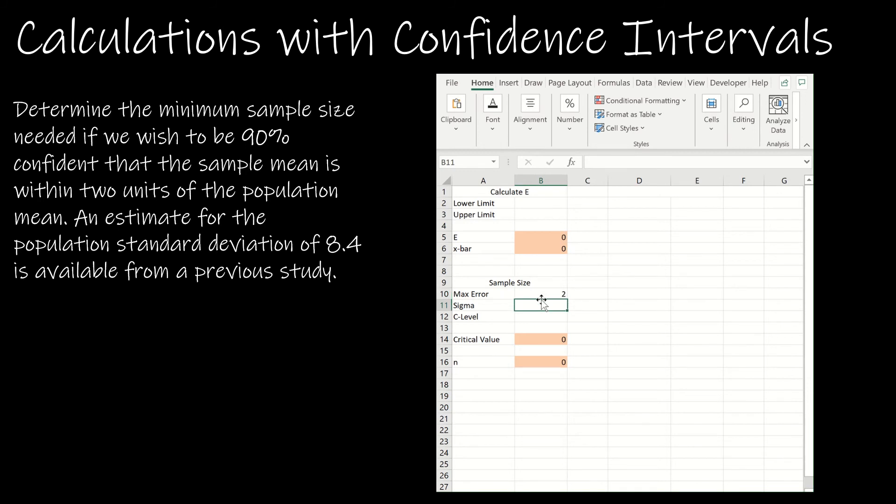Now, keep in mind that the max error in our example was 2, sigma was 8.4, and my confidence level was 0.9. And I have set up Excel to find the critical value. And again, how did I do that? I'm just using norm inverse, or I should have used norm.s.inverse. And then I wouldn't need the comma 0, comma 1. But it's going to give me the same thing.